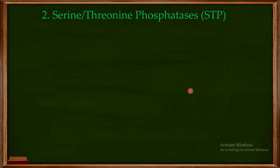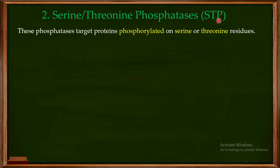In this video, I want to focus on other important types of phosphatases. The second important type is known as the serine threonine phosphatases, or STP for short. As the name indicates, these phosphatases remove the phosphate group from proteins that have been phosphorylated on the serine or threonine residue. The 'serine threonine' part indicates the substrate — the specific amino acid from which this phosphatase removes the phosphate group.